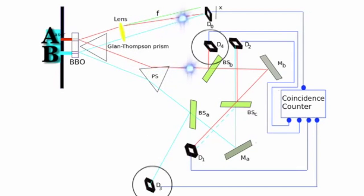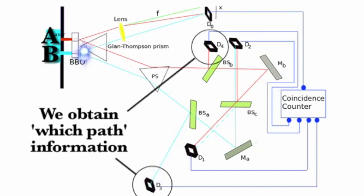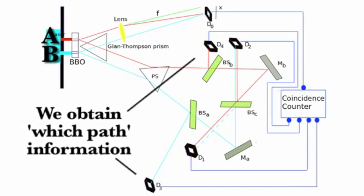Now if the photon hits either one of these detectors, notice what happens: we obtain which path information. Because the only way the photon could hit D three is if it came out of B, and the only way it could hit D four is if it came out of A. There is no way a photon that came out of B could hit D four, and vice versa. So if a photon hits D three or D four, we will know the path information it took, and we will get a clump pattern.